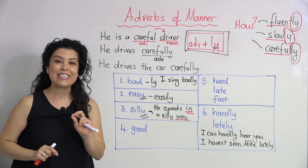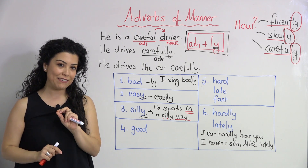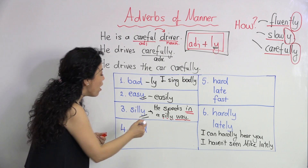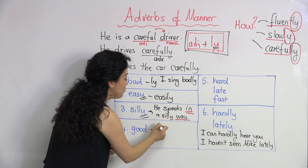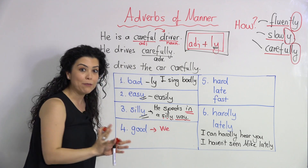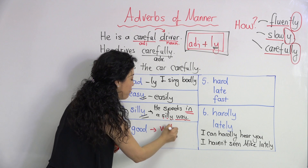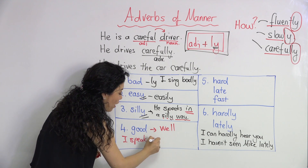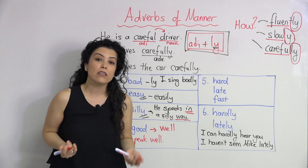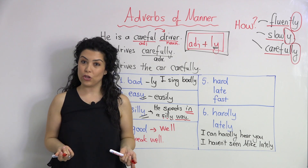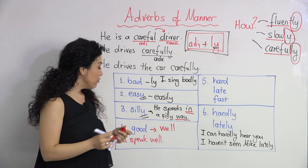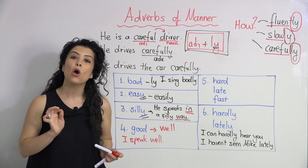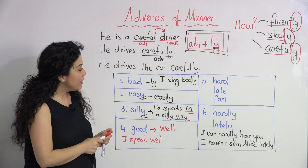Another exceptional case is with the word 'good.' It's an adjective, but when forming an adverb it changes form completely — it becomes 'well.' For example: 'I speak well,' or 'I can cook well.' You don't say 'goodly' — that's wrong. You need to say 'well.'